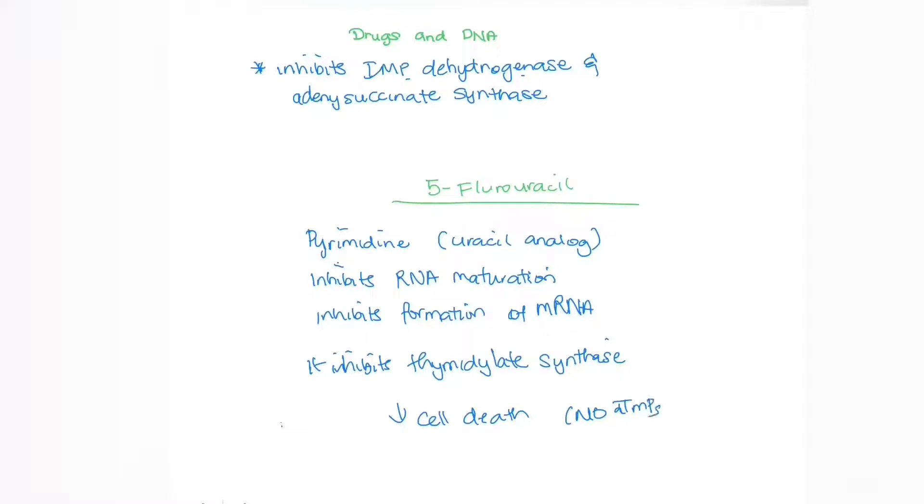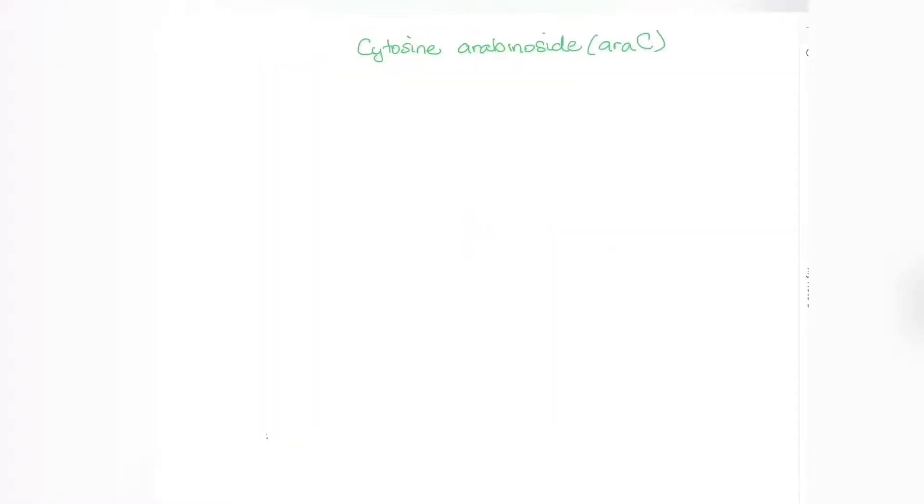Because of this, there can be no production of dTMPs and therefore there is cell death. Let's move on to the next drug, which is called cytosine arabinoside.